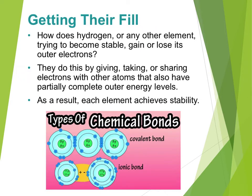Atoms will do almost anything to get a full outer shell. They will take electrons from something else, they will give away their electrons — thus leaving them with a complete inner shell when the outer shell vanishes and the inner shell becomes the outer shell. Or some elements will start to share electrons amongst each other and treat those shared electrons as their own. As a result of this giving, taking, and sharing of electrons in a bond, all the elements in the bonds end up becoming stable — achieving a stability that they do not have on their own.